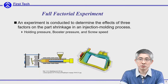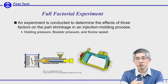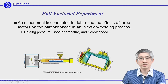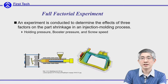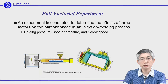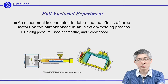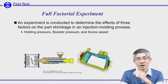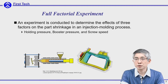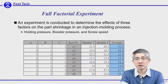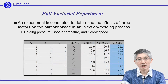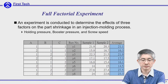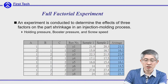Assume you are doing an injection molding example. You want to reduce the shrinkage rate. You are considering three control factors: the first one is holding pressure, the second one is booster pressure, and the third is screw speed. You assume a two-level design, so you can put them in an L8 fractional factorial. The full factorial design will have eight combinations — A, B, C — which are two-level, so in total eight combinations.